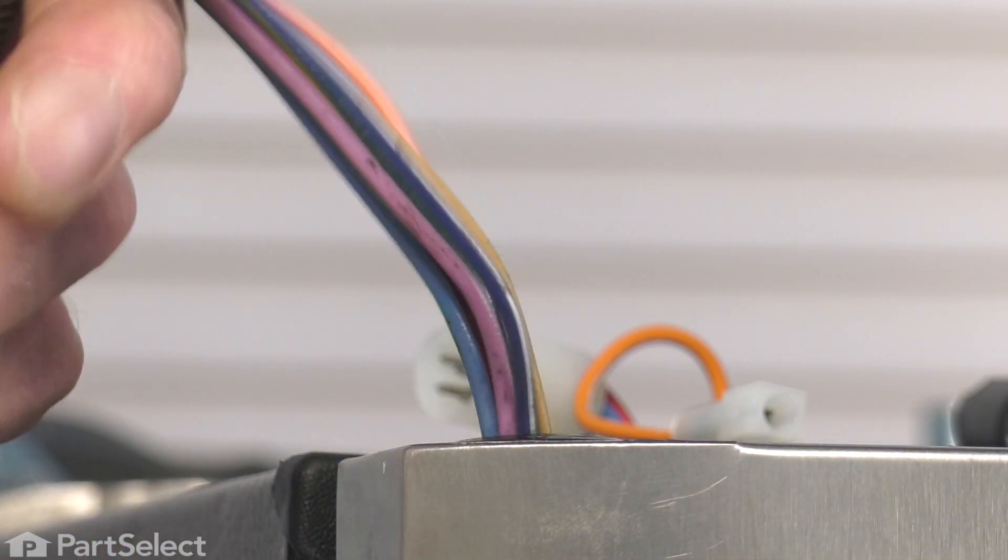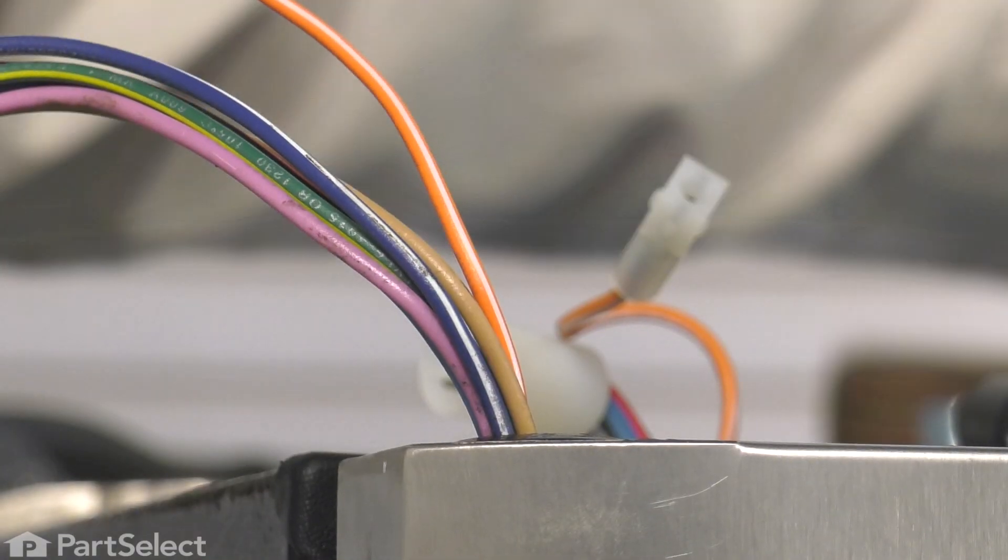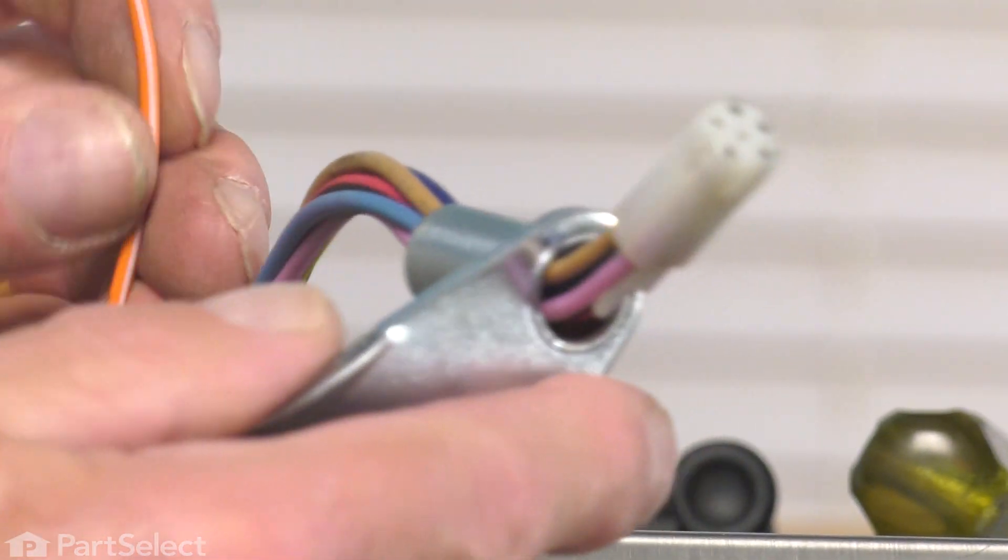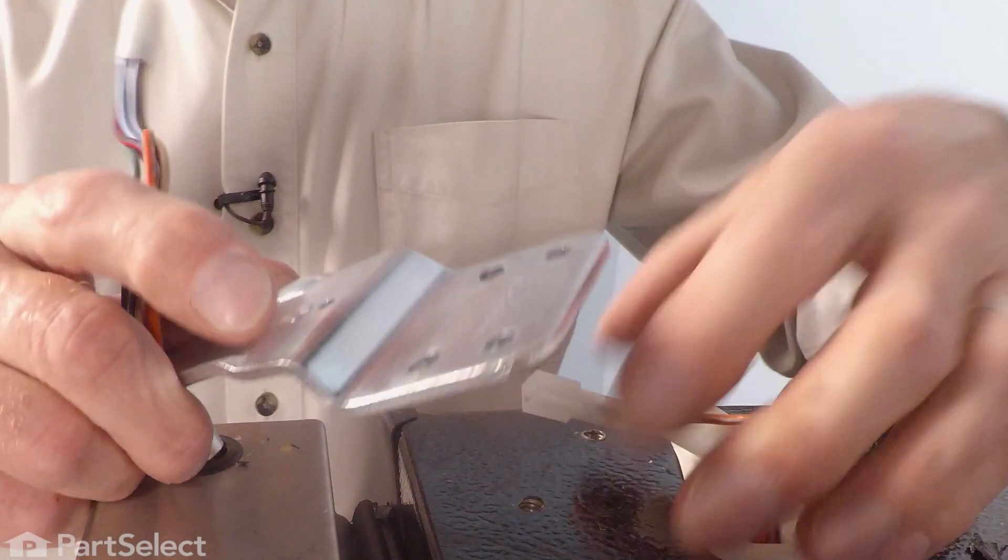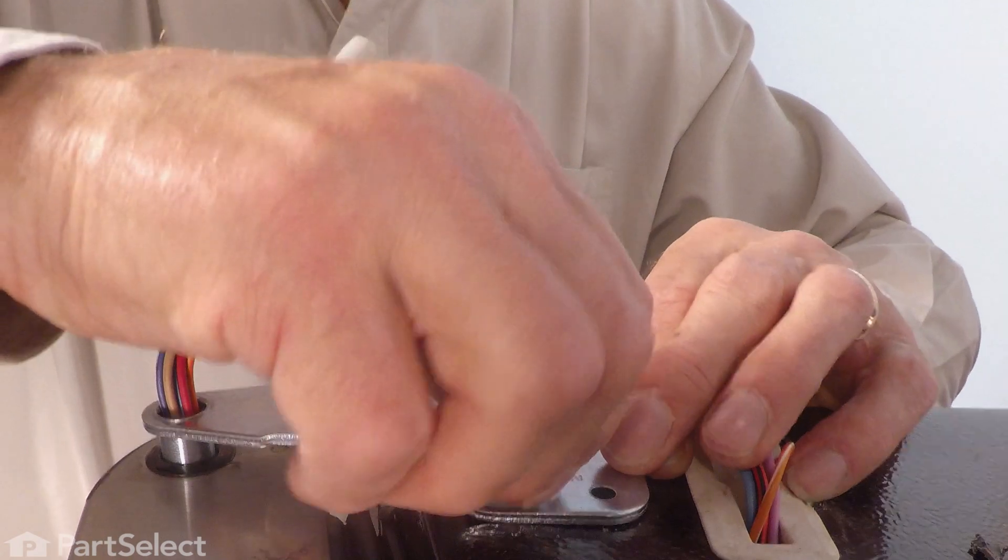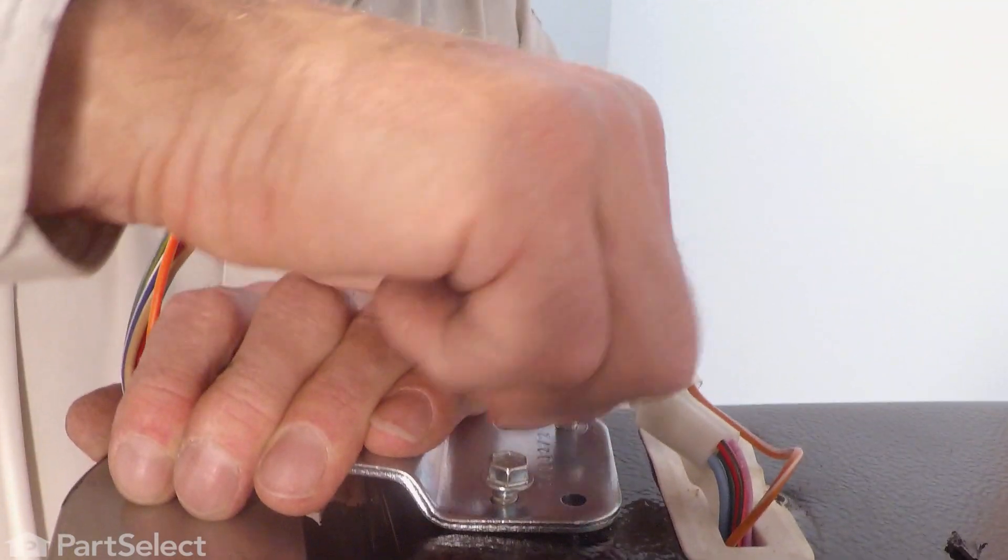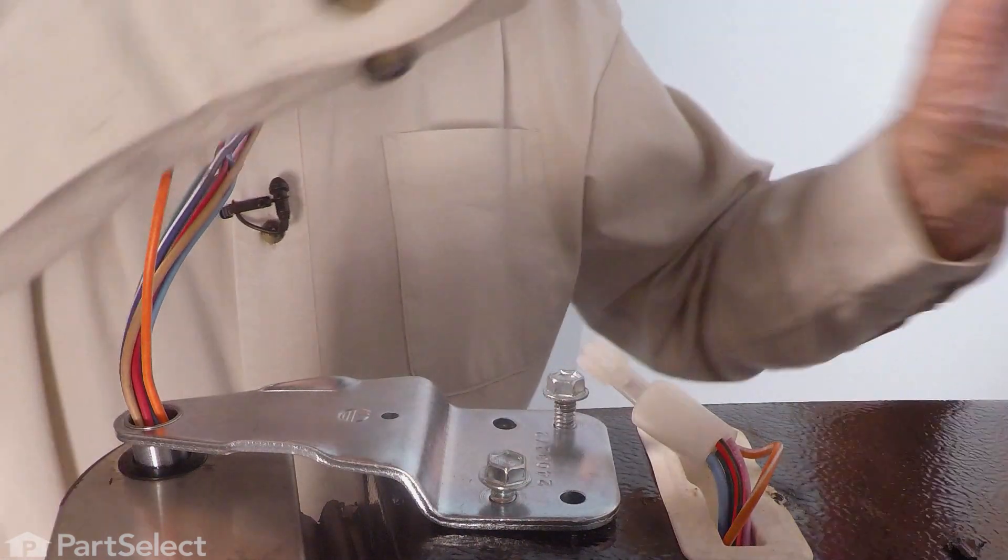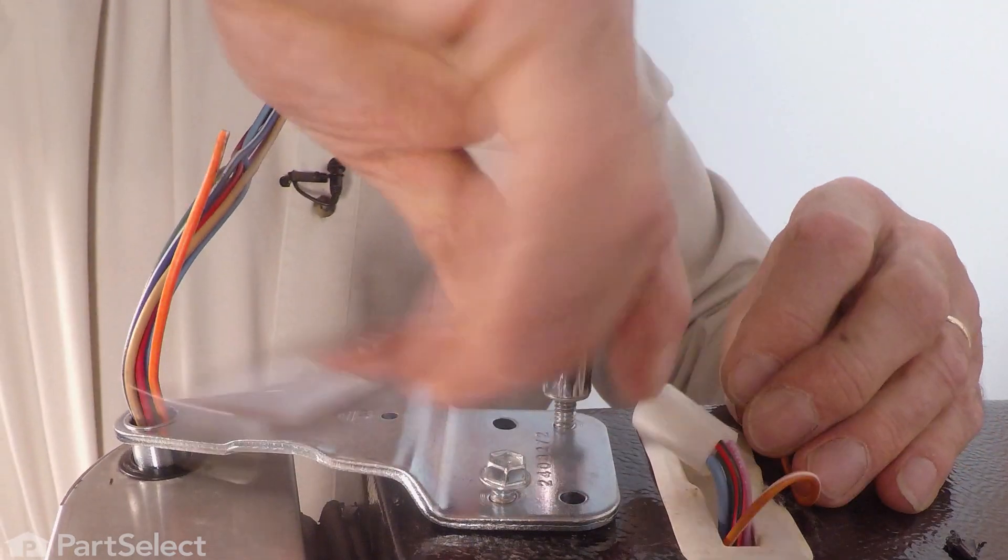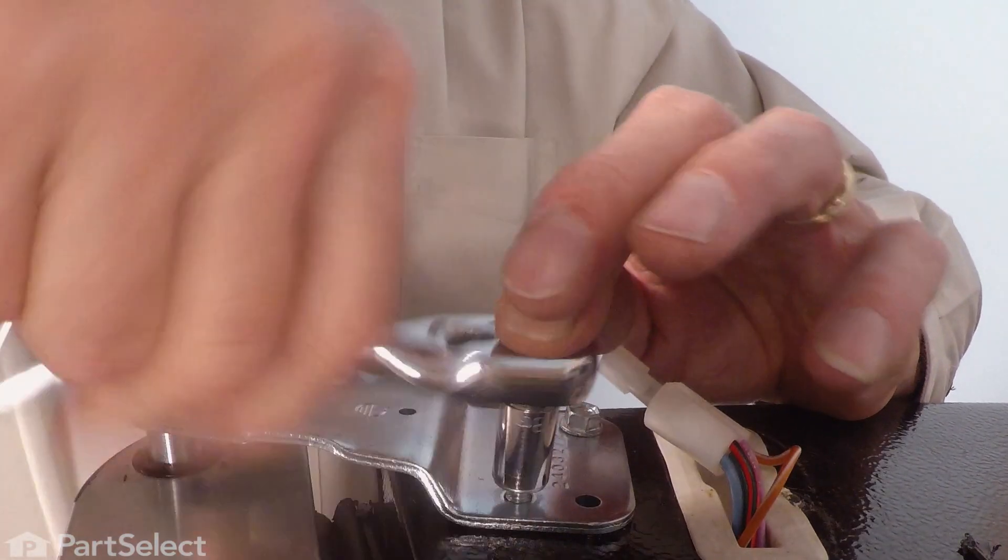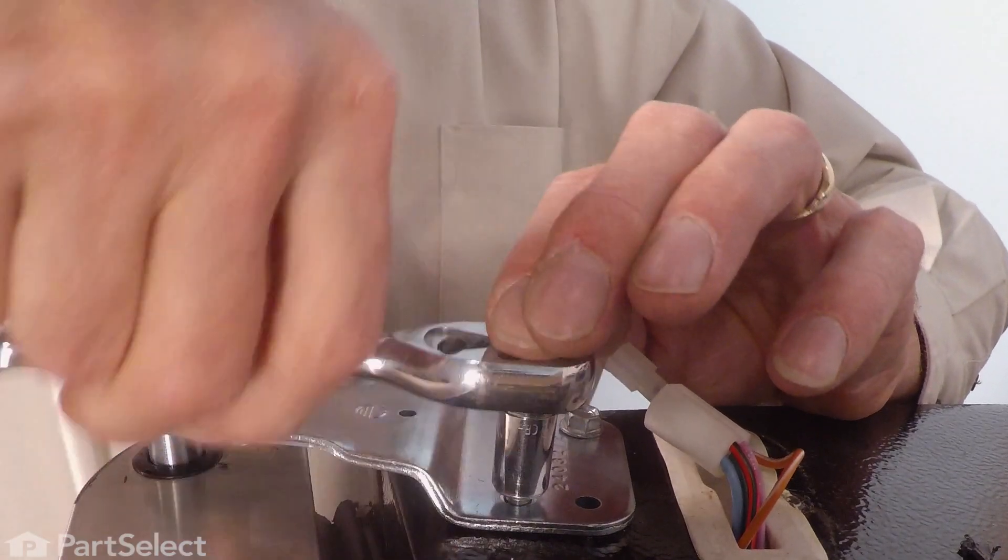Once we have it knocked in nice and flush, we'll put our hinge back in place. Slide the wire harness up through from the bottom along with that single harness lead. We'll reattach the two mounting bolts. I always thread these bolts in by hand at first to make sure that we don't get them cross-threaded. We won't tighten those just yet until we line up the door to make sure that we have it nice and straight.